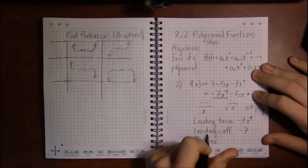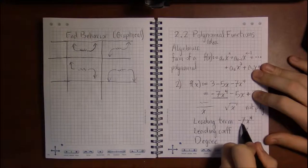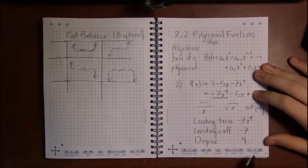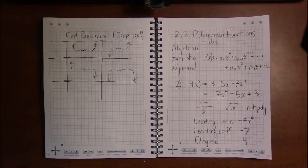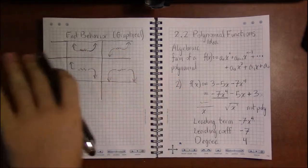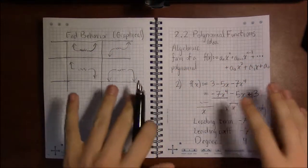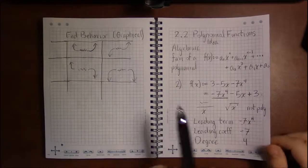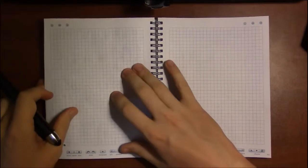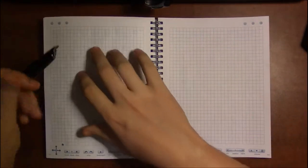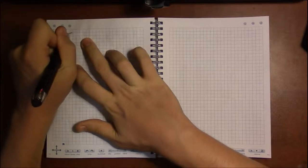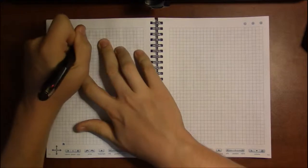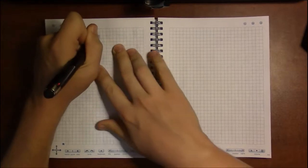And these two numbers help determine the far left and far right behavior of the graph of the polynomial. Now, this far end behavior is called just 'end behavior,' and this relates to the graph of polynomials.